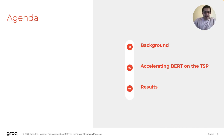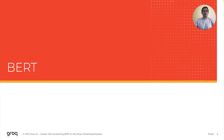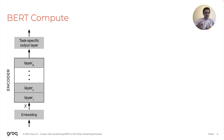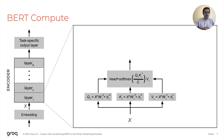Before talking about how we accelerate BERT on the TSP, I'll give a bit of background, and then we'll talk more about the results. Let's start the background by talking about BERT from a compute perspective — trying to figure out what equations we need to compute to get an inference working through BERT. At the high level, you can view BERT as divided into three blocks: an embedding block, an encoder block, and a task-specific output block. Most of the compute is really within that encoder block, so let's look at it under the hood.